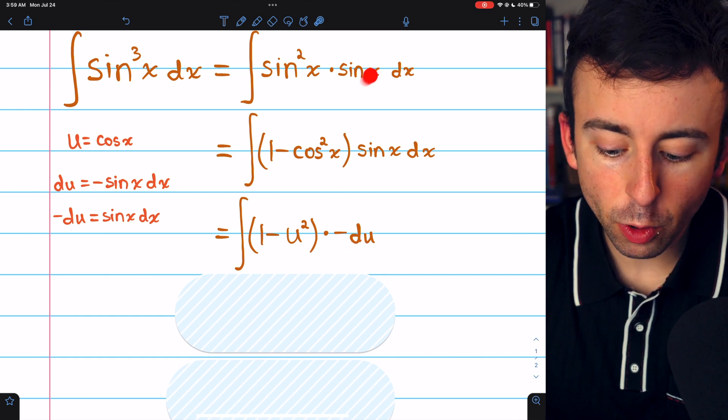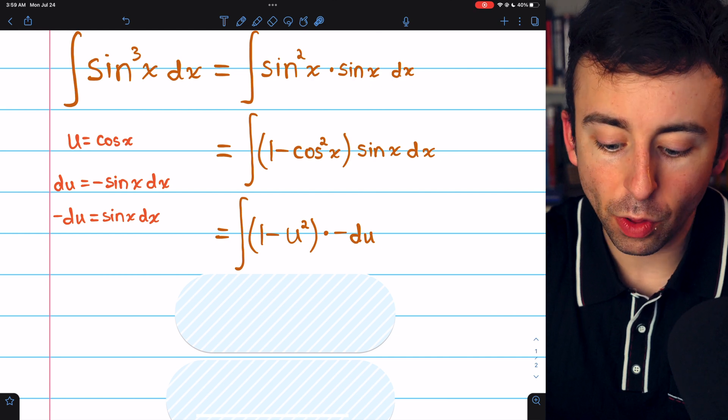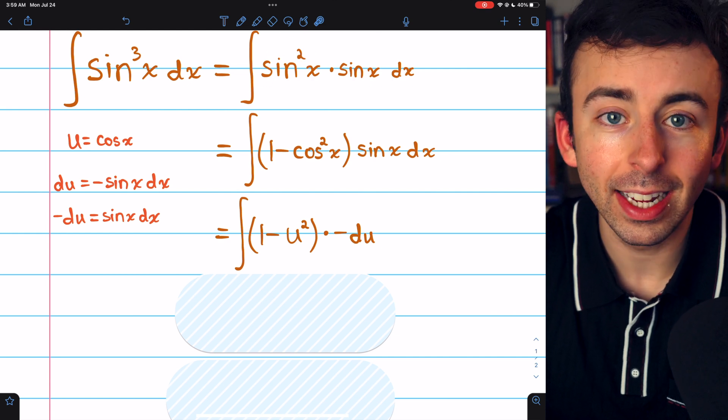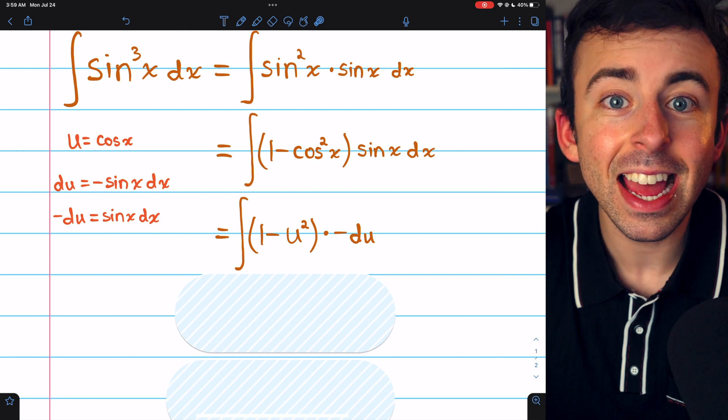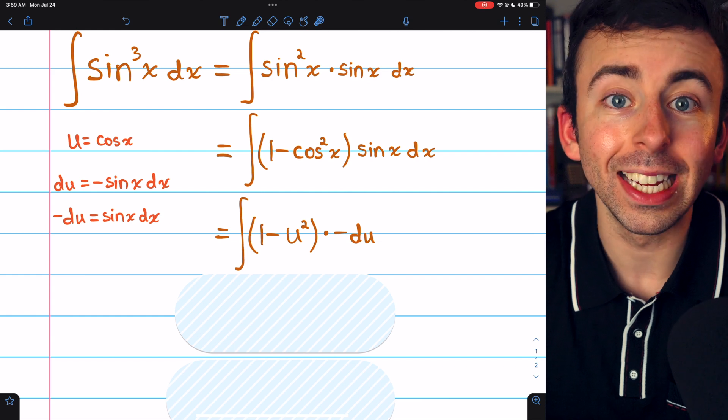Again, taking that one factor of sine out in the beginning accomplished two things. It made the remaining power of sine even so we could use the Pythagorean identity, and it gave us something that the u substitution could capture.